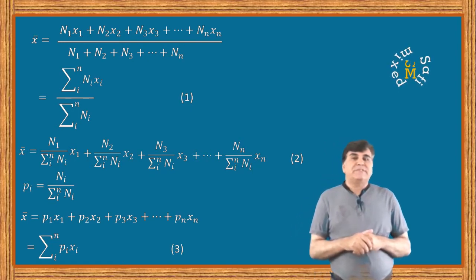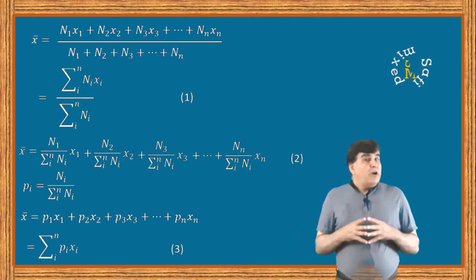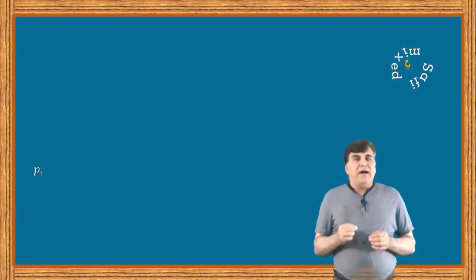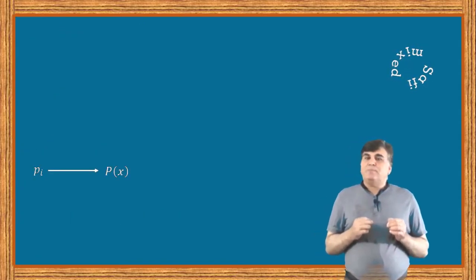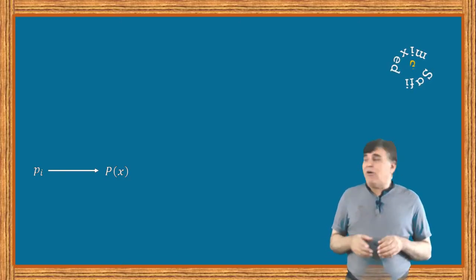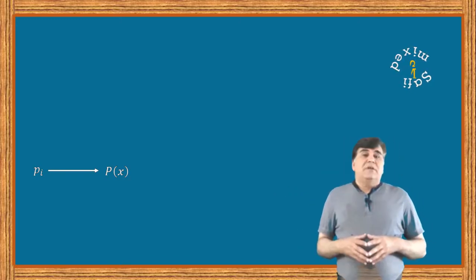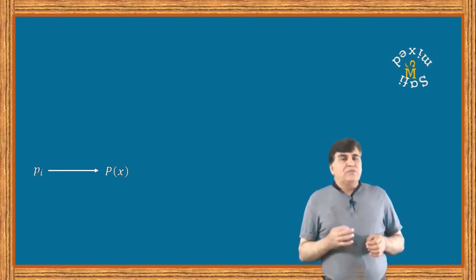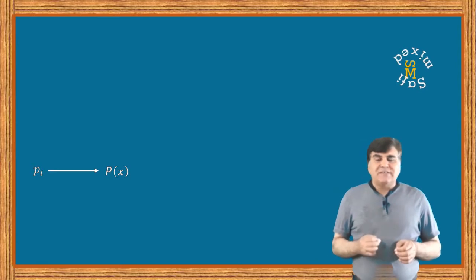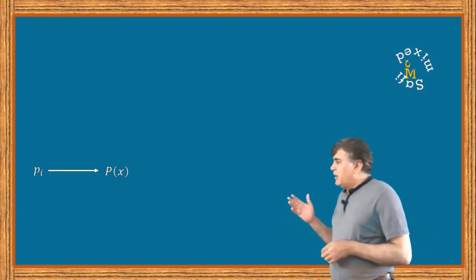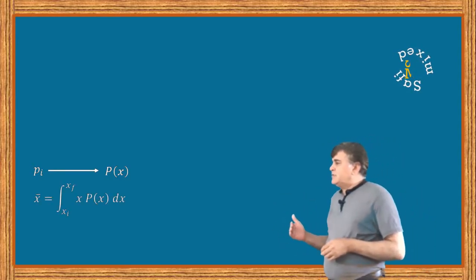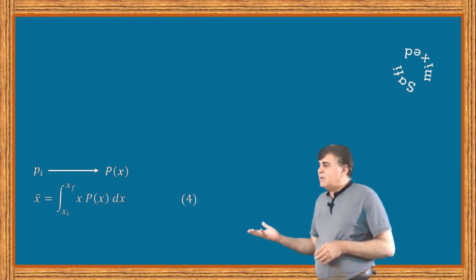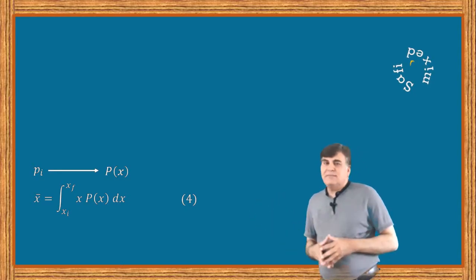For a continuous probability distribution, p sub i becomes a function of position x and is written as p of x, and the summation is replaced with an integral sign. In this notation, equation 3 takes the form: x-bar equals the integral from initial position x sub i to final position x sub f of x times p of x dx.